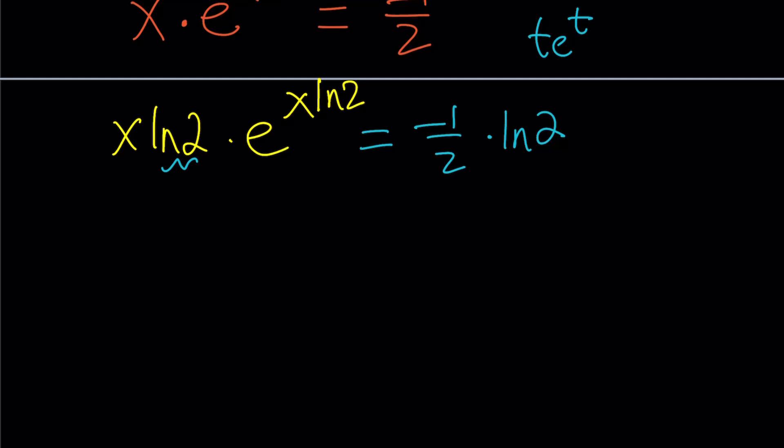I can do a little bit of manipulation with rules of logarithms. Let's take negative 1 half ln 2, and then write it as 1 half. I'm going to put this negative 1 as a power, ln 2 to the power of negative 1, which is 1 half of ln 1 half.